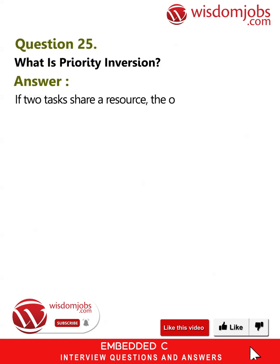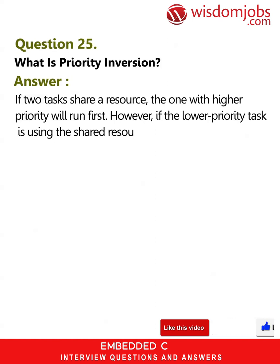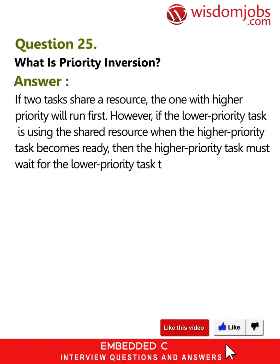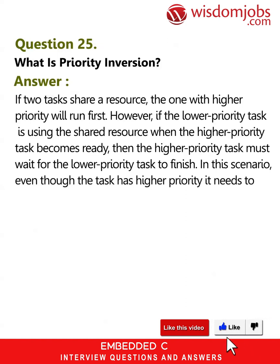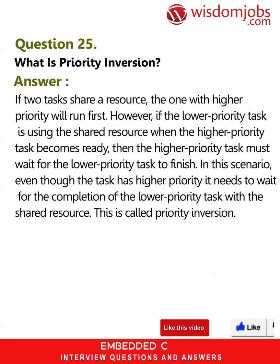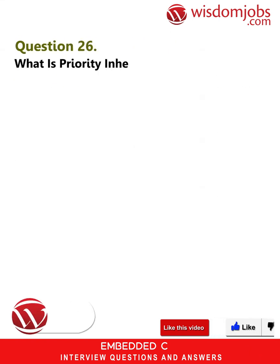Question 25: What is priority inversion? Answer: If two tasks share a resource, the one with higher priority will run first. However, if the lower priority task is using the shared resource when the higher priority task becomes ready, then the higher priority task must wait for the lower priority task to finish. In this scenario, even though a task has higher priority, it needs to wait for the lower priority task with the shared resource. This is called priority inversion.